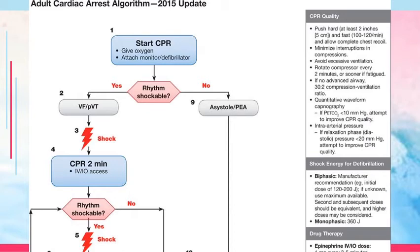ACLS — advanced cardiac life support — is applied in paramedic and hospital settings. Once cardiac arrest is recognized, start CPR right away. While someone does CPR, another person attaches the patient to oxygen therapy, the monitor, and the defibrillator — these efforts are simultaneous. If the rhythm is shockable — determined by the cardiac monitor — deliver your shock. There are only two shockable rhythms: ventricular fibrillation and pulseless V-tac. After shock, do CPR for two minutes and ensure intravenous or intraosseous access. Two minutes equals approximately five cycles of CPR (5 cycles of 30 to 2).